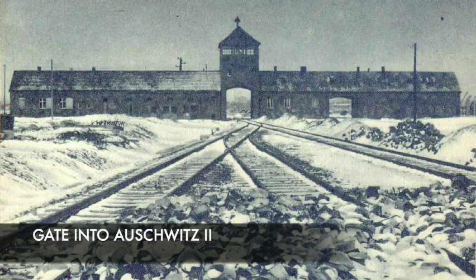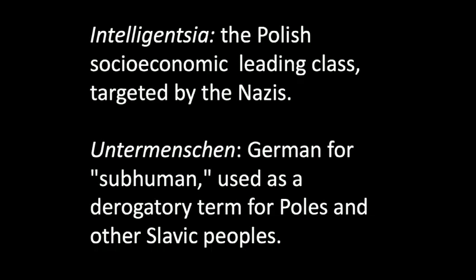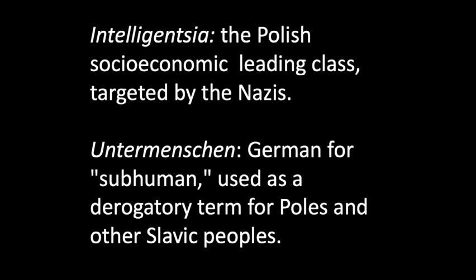Most of the killing of the Holocaust took place in Eastern Poland, Belarus, and Ukraine. The Poles and the Slavic groups in the Soviet Union — the Russians, Belarusians, and Ukrainians — were subjected to immediate brutality after the German invasion. The first victims were Bolshevik commissars. The Nazis especially targeted the Polish leading class called the intelligentsia. The Polish people were labeled Untermenschen, meaning subhuman in German.